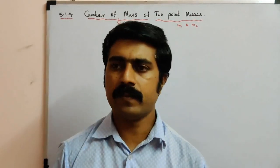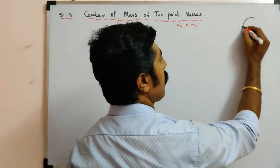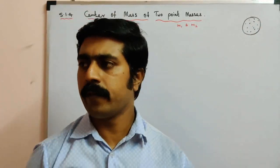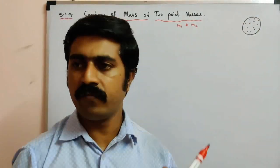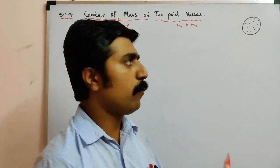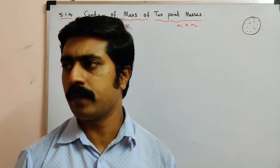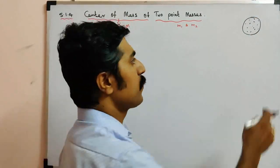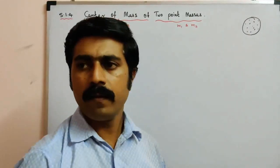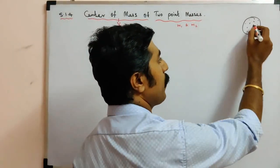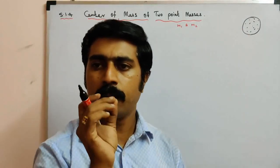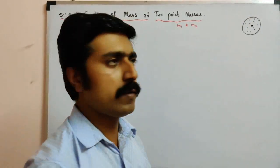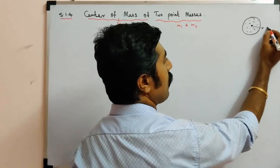What is meant by center of mass? See, one object contains so many particles, so many points. Each point or each particle has some mass. So the entire mass of the body appears to be concentrated in a common point. That one common point where the total mass is concentrated is called the center of mass.